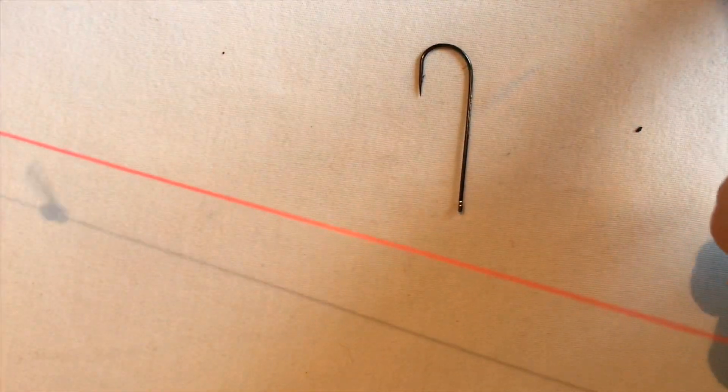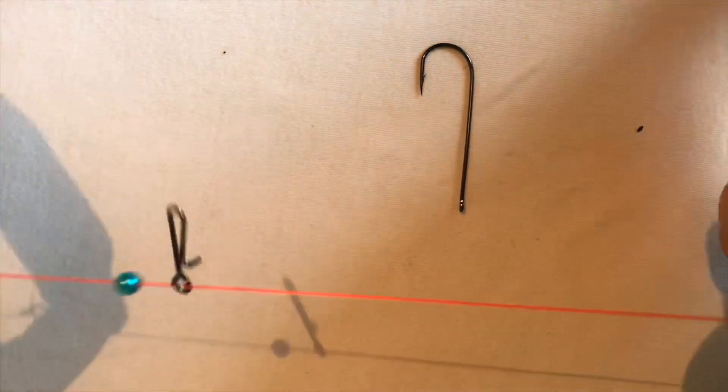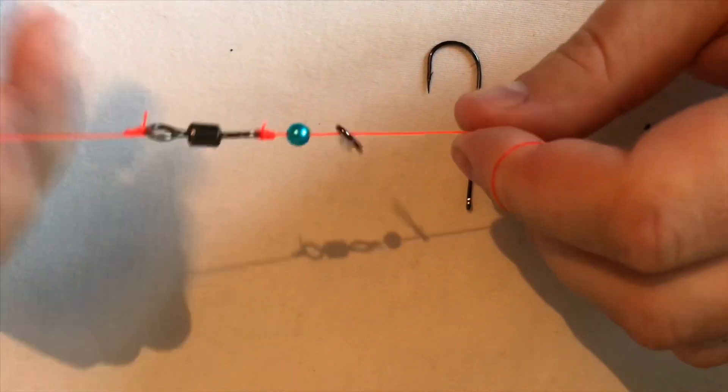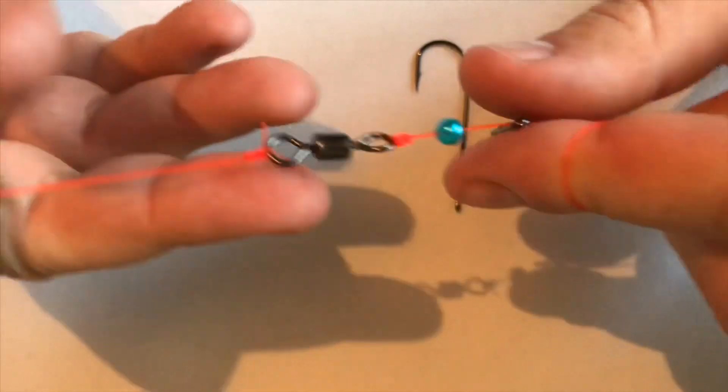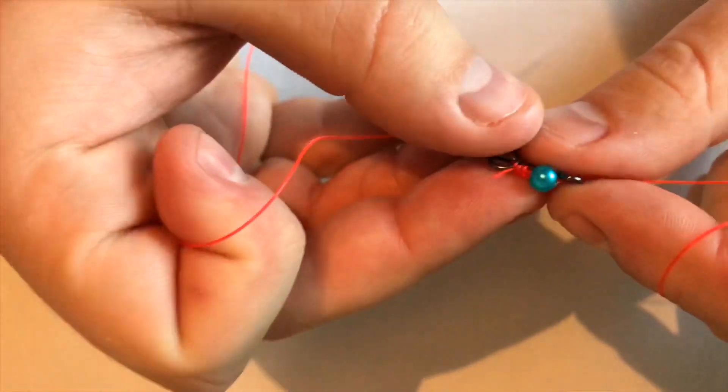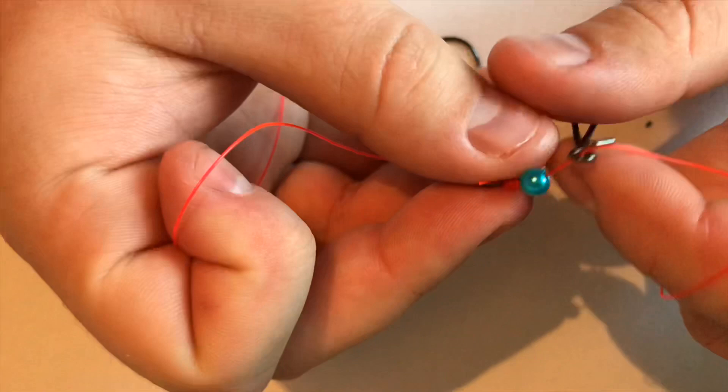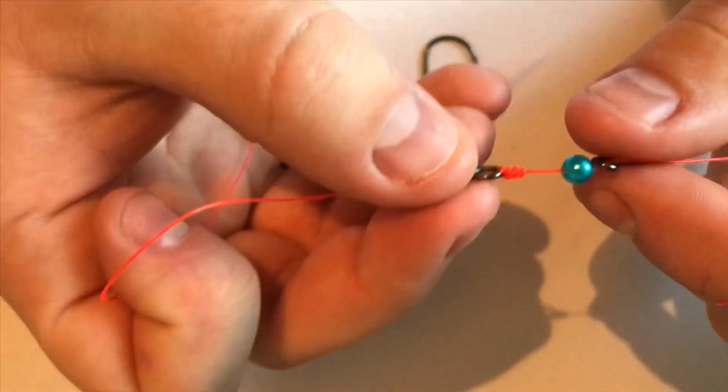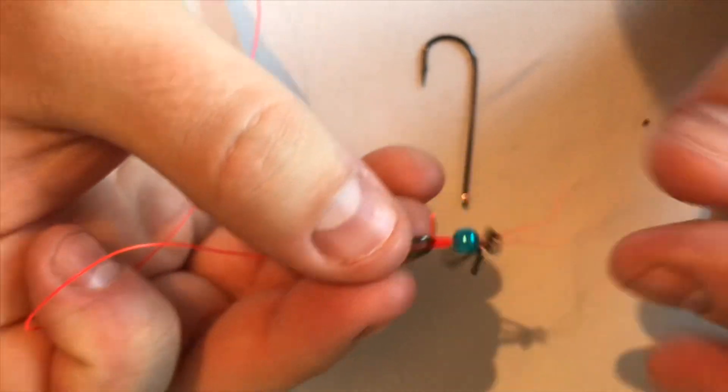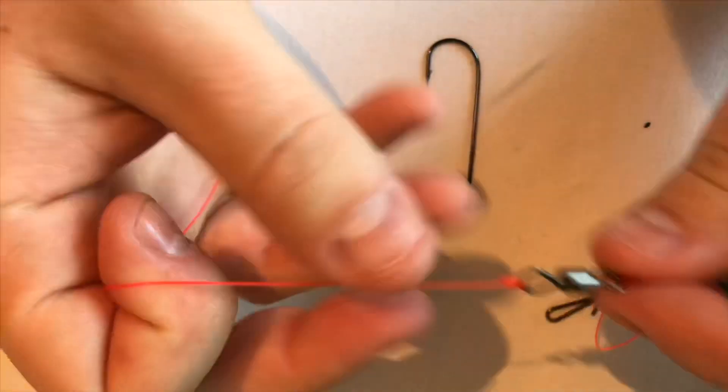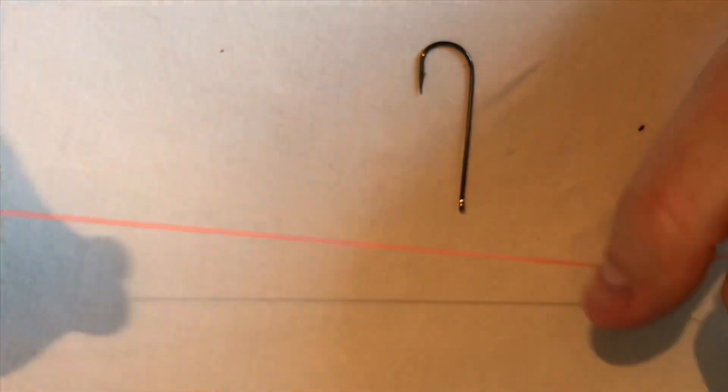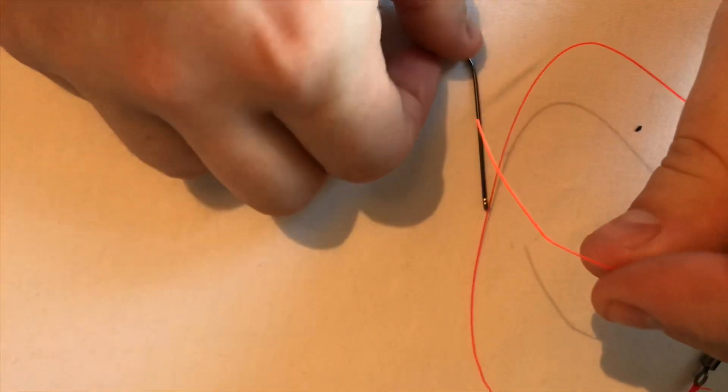So we've got our main line from the rod that comes down to your link or clip, to the bead. The bead's there so it stops the clip here with the weight on from rubbing against the knot and eventually fraying it, and it'll cause you to snap. That's why the bead's there. Then it runs to your swivel and then your trace where your hook will be.